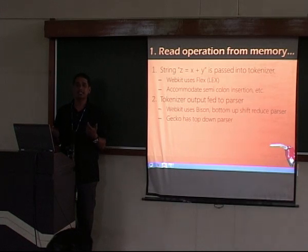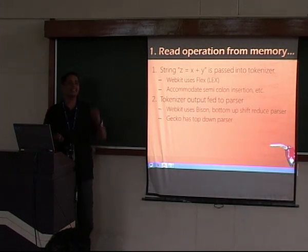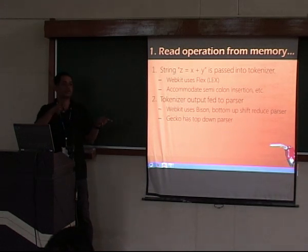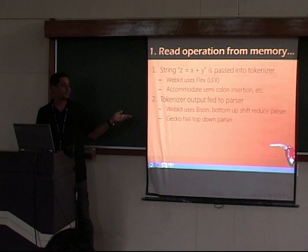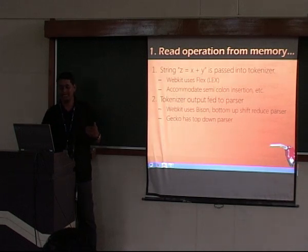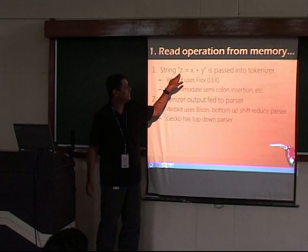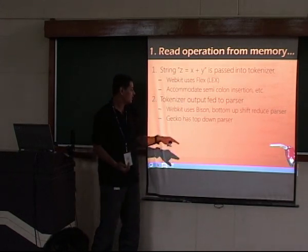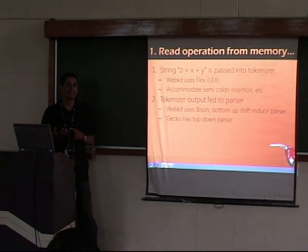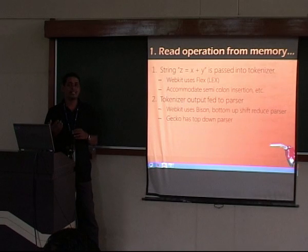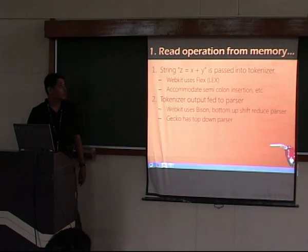An abstract syntax tree effectively is a tree that says z is at the top, with two nodes saying x plus y. WebKit uses Bison, which is a bottom-up shift-reduce parser, meaning it reads one token after another — when it sees z = x + y, it starts from z and constructs the expression one after the other. Gecko, on the other hand, I believe uses a homegrown top-down parser. At the end of this stage, you have an AST which tells you what the expression means.